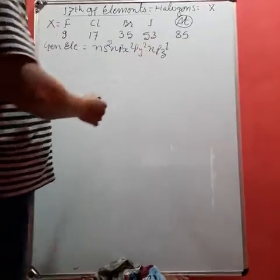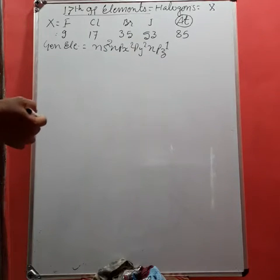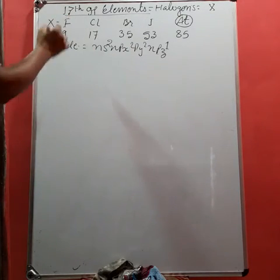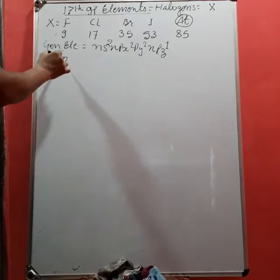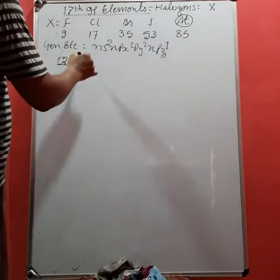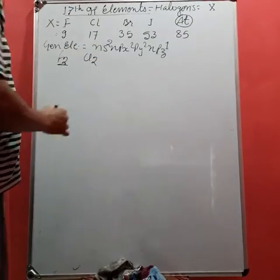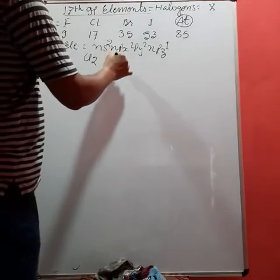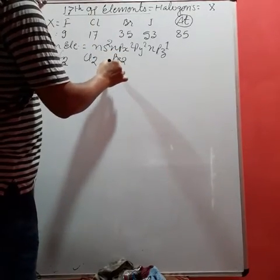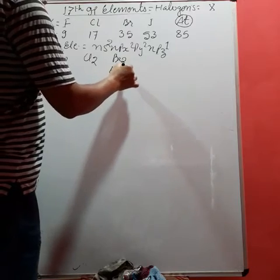Fluorine exists as F2 due to very small size forming pi-pi bonds. Similarly chlorine exists as Cl2, but bromine exists as Br2 which is liquid in nature.